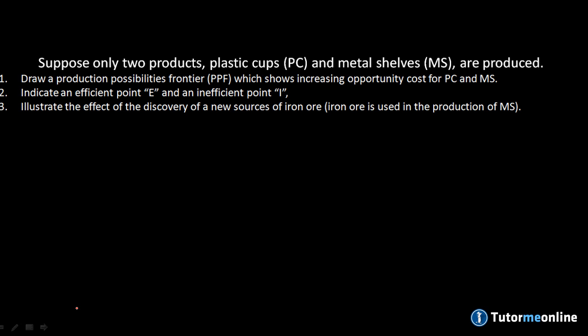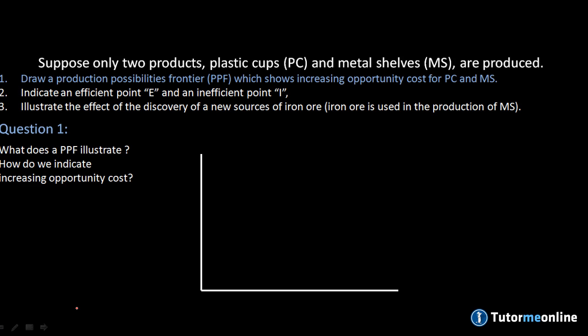Suppose only two products are produced: plastic cups (PC) and metal shells (MS). We'll draw the production possibility frontier to show increasing opportunity cost for both PC and MS. We will indicate efficient point E and inefficient point I, and also illustrate the effect of a discovery of a new source of iron ore which is used in the production of the metal shells. So the first question is to draw the PPF which shows increasing opportunity cost for both PC and MS.